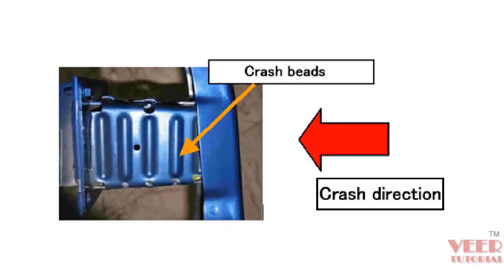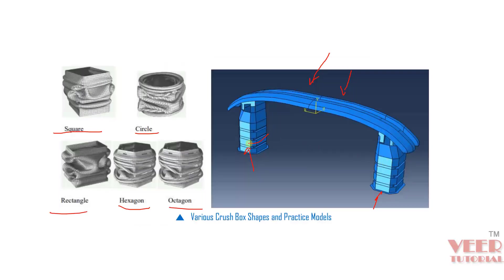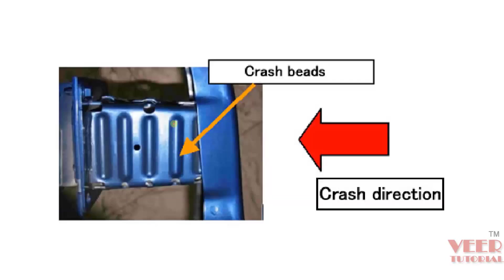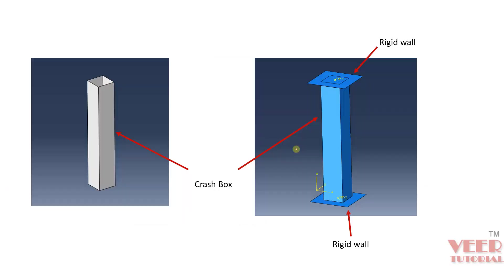If you take a look at any crash box, you can see these types of beads. The main advantage of having these beads is that they help in the crumpling of the crash box. If you do not provide beads, the crash box may become much more rigid and will bend instead of crumple. So if you look at any crash box in a vehicle, you will see these types of beads. In this problem, we are going to perform the analysis of a crash box.